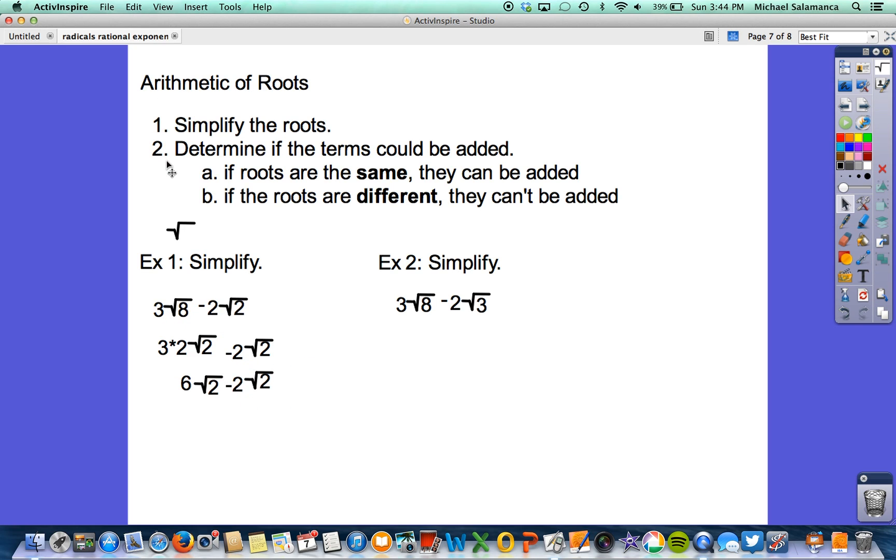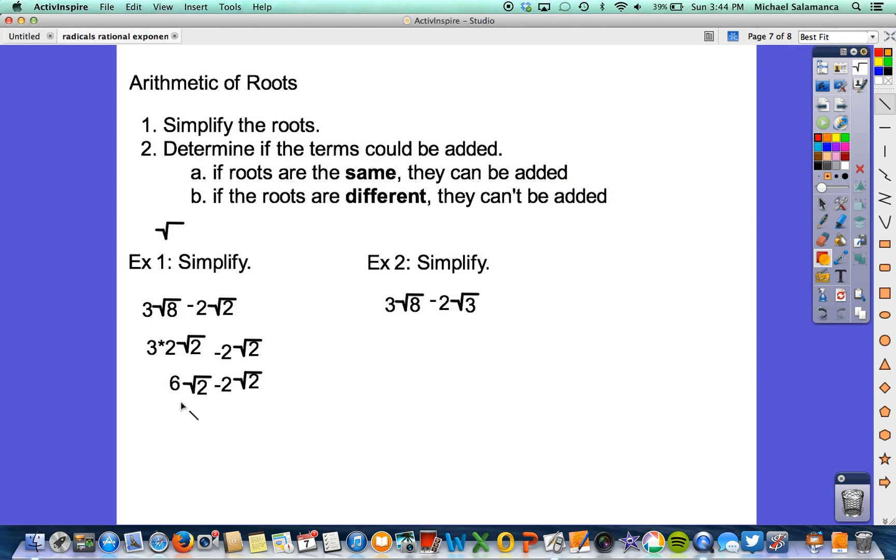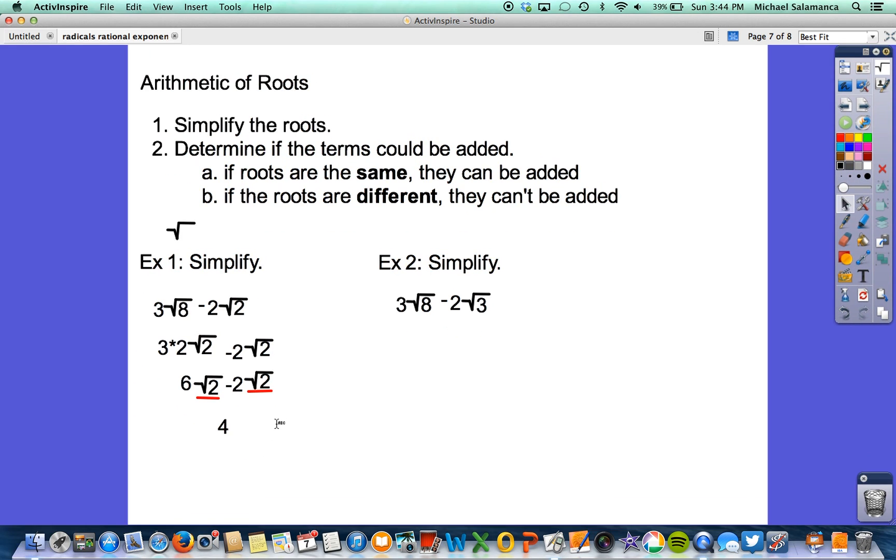Minus 2 square root of 2. So according to part 2, it says if the roots are the same, they can be added. So looking at our roots, this is root 2. This is root 2. They're the same exact root. So we're really just doing 6 minus 2 is 4. 4 square root of 2 is our final answer for that one.